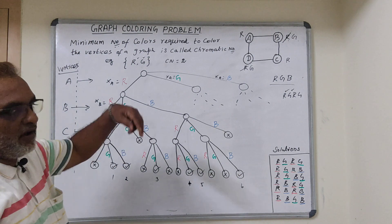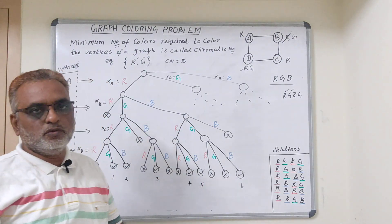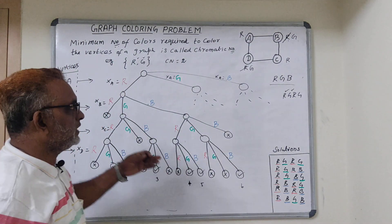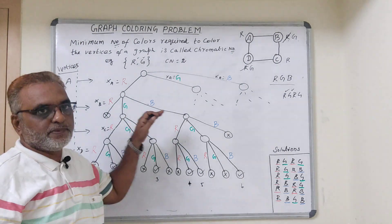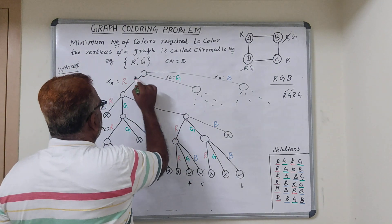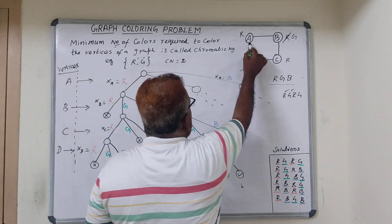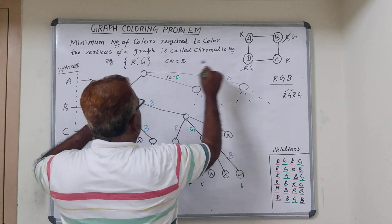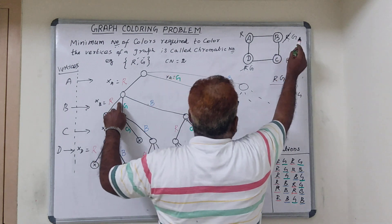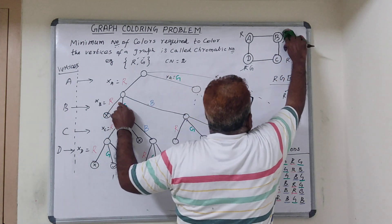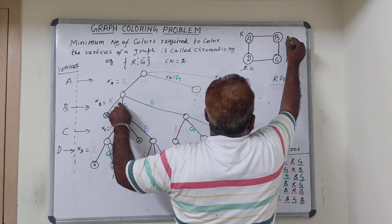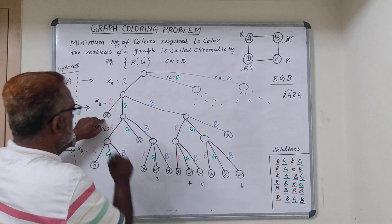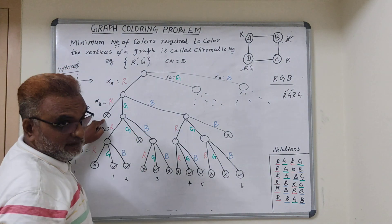Similarly, there are many possible solutions. In order to find all solutions, we generate the state space tree. Initially, consider XA as red. Now B cannot be red because A is already red, so that branch is not a solution and we terminate the search there. We then proceed with the next color for B.